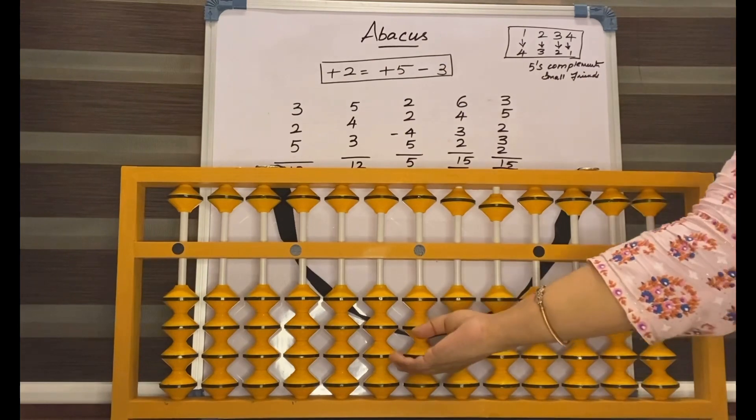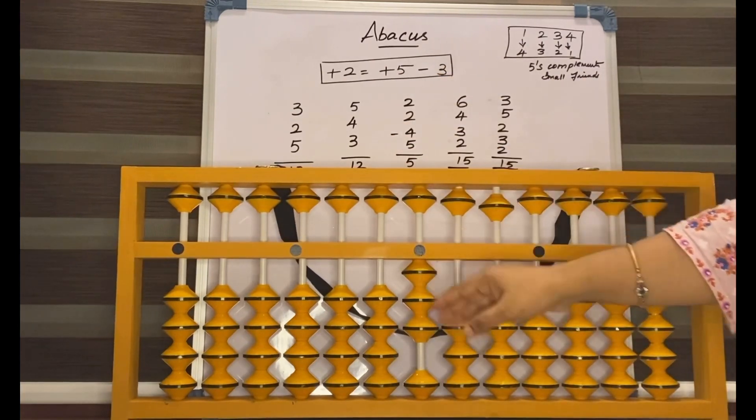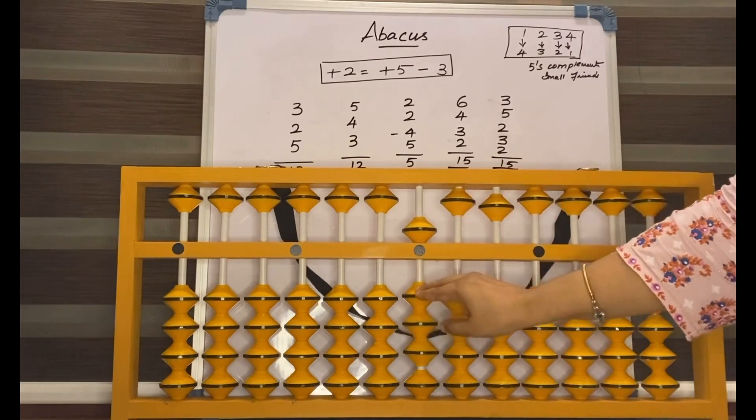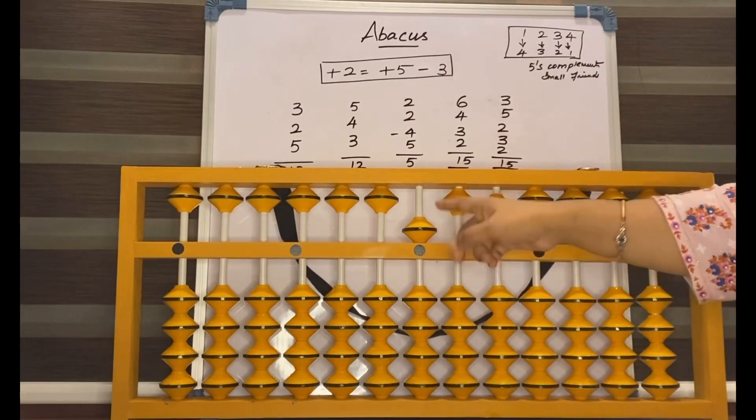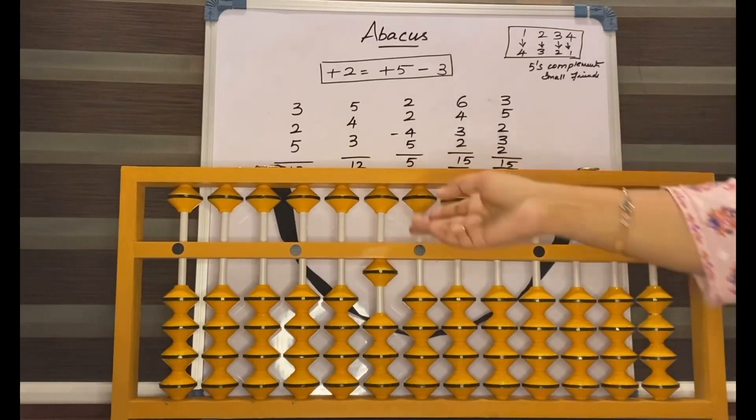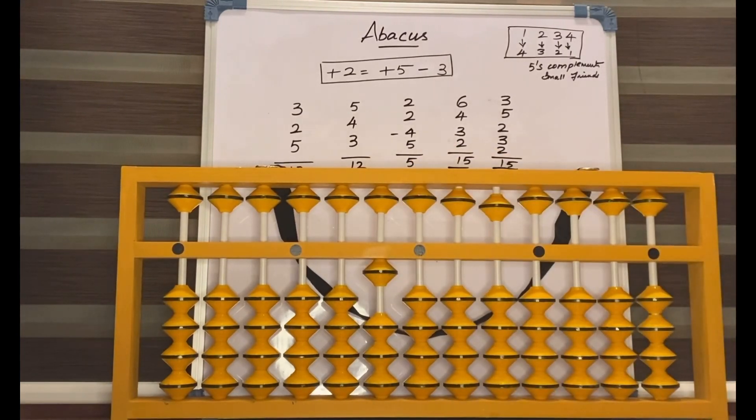Now take 3, 2. How to take 2? Add 5 less 3, add 5 less 3, 5 again. How to take 5 here? That is add 10 less 5, big friend formula. What is the answer? 10.